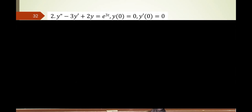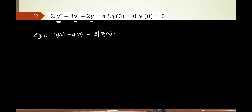Let's try another one. You have a second derivative, a first derivative, and then a y. For the second derivative term, it is s squared y(s) minus s y(0), then minus — there's no more s — so it becomes y prime of 0. Next, there's a minus 3 times the first derivative: that's s times y(s) minus y(0). And then plus 2 times y: since it's not a derivative, that just becomes 2 y(s).